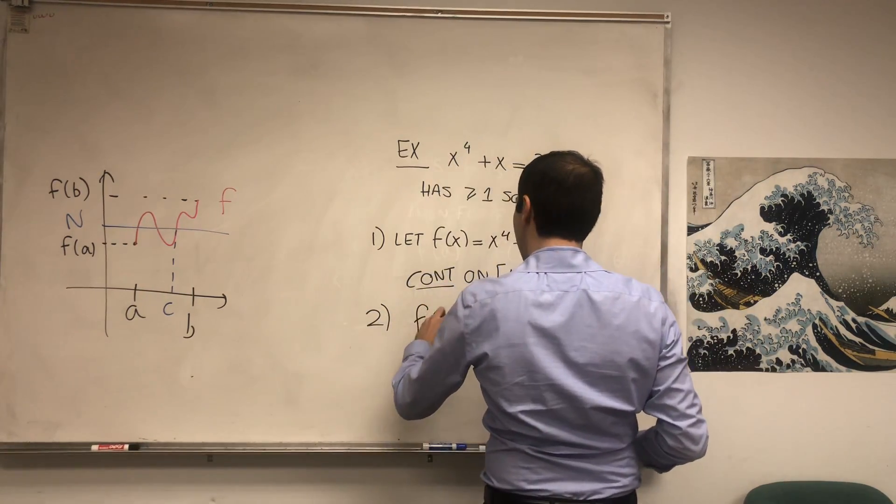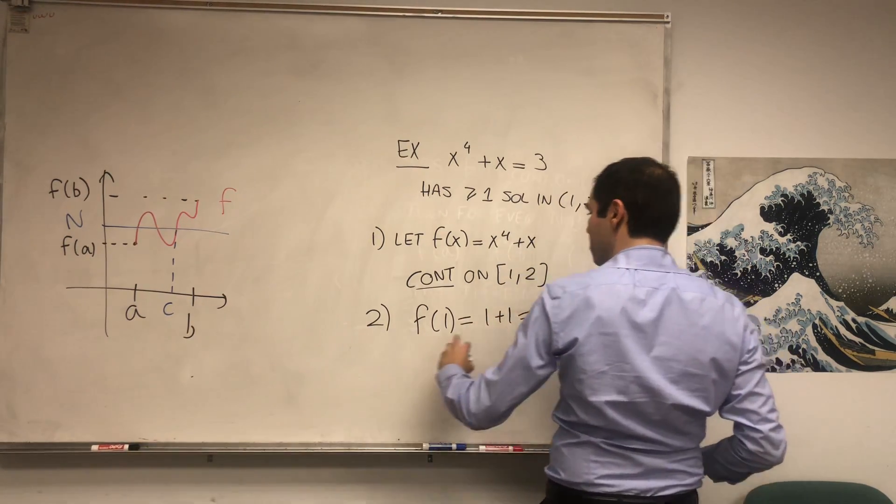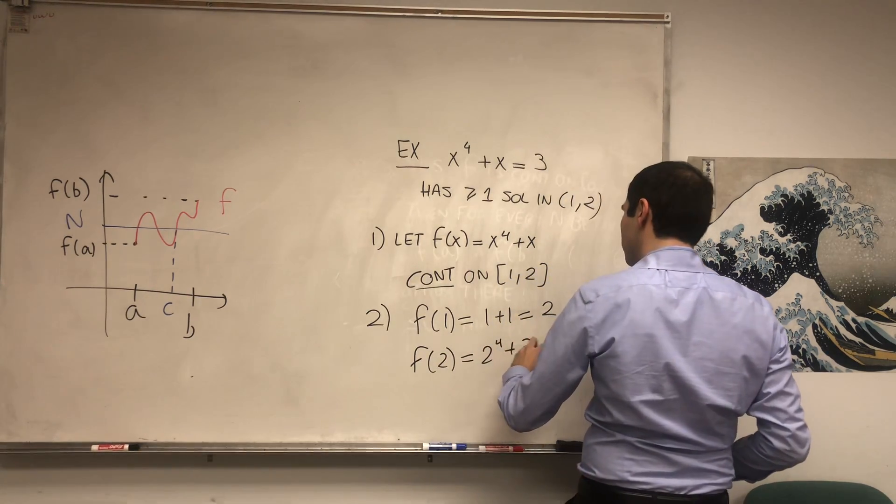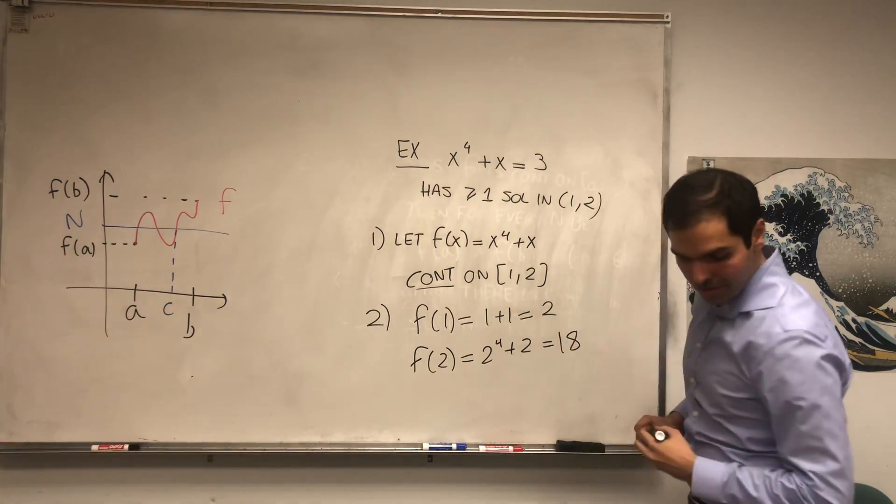Now, let's figure out f(1). f(1) is 1 + 1, which is 2. f(2) equals 2^4 + 2, which is 18.